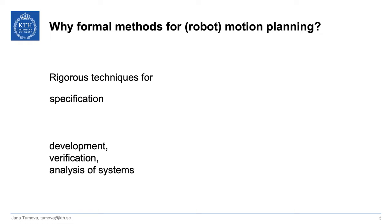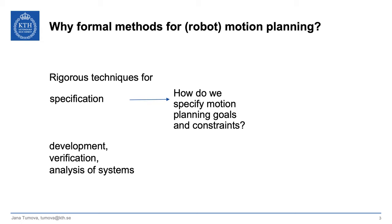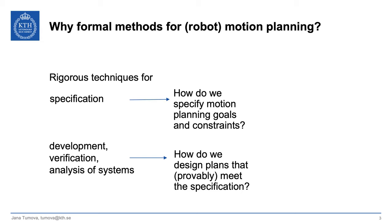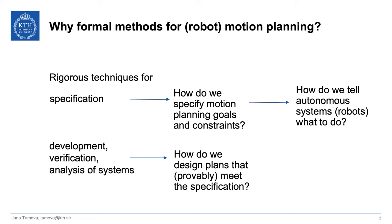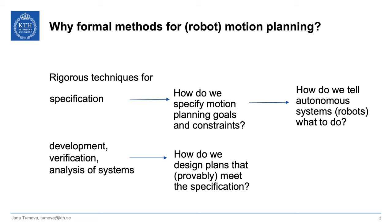Why should we look into formal methods for motion planning? Formal methods are rigorous techniques for specification, development, verification, and analysis of systems. Within robotics and autonomous systems, the specification question is how do we specify motion planning goals and constraints, and the development/verification question is how do we design plans that provably meet some specification. The ultimate goal is: how do we tell autonomous systems what to do, and how do we ensure they behave as expected?